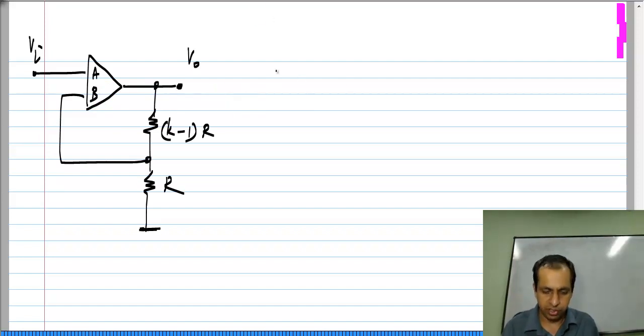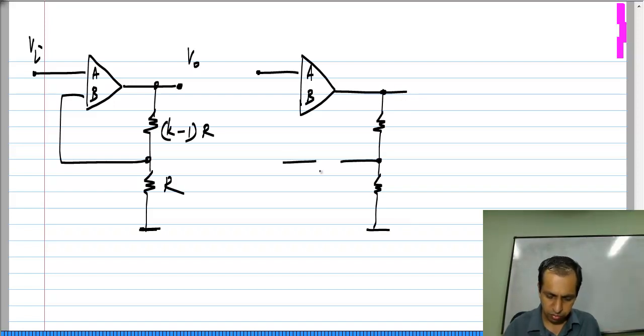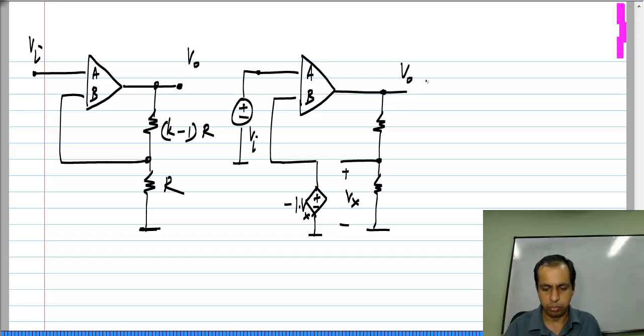So, let me modify this circuit slightly and let me insert a voltage control voltage source of gain minus 1 in feedback. I will call this V x and this is minus 1 times V x. This is my circuit and I apply my input voltage V i over here and I take the output there.